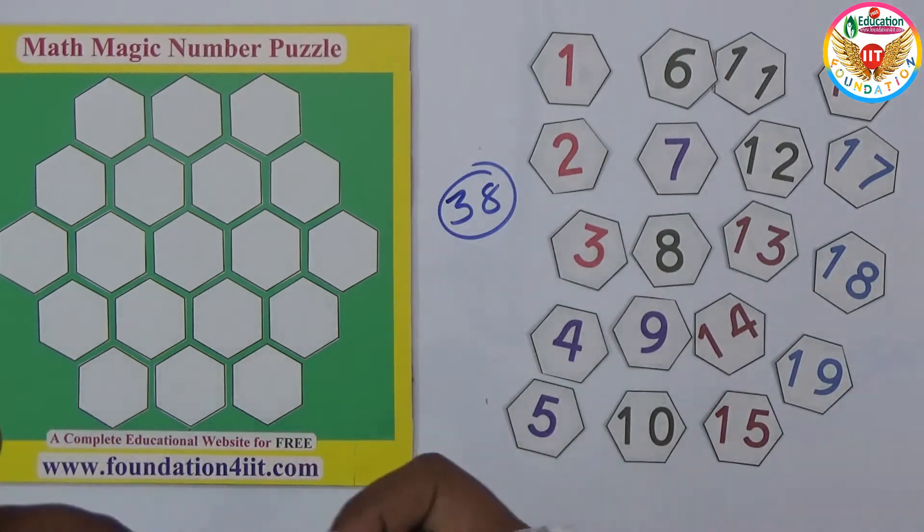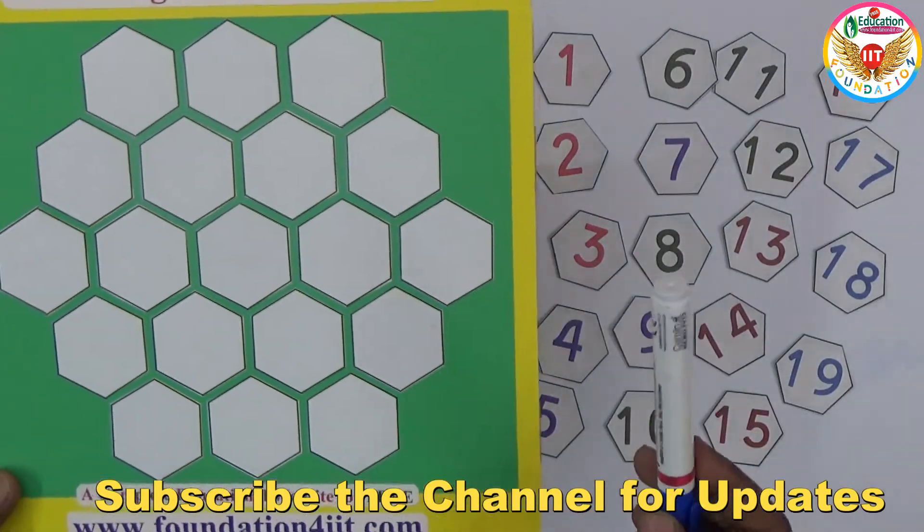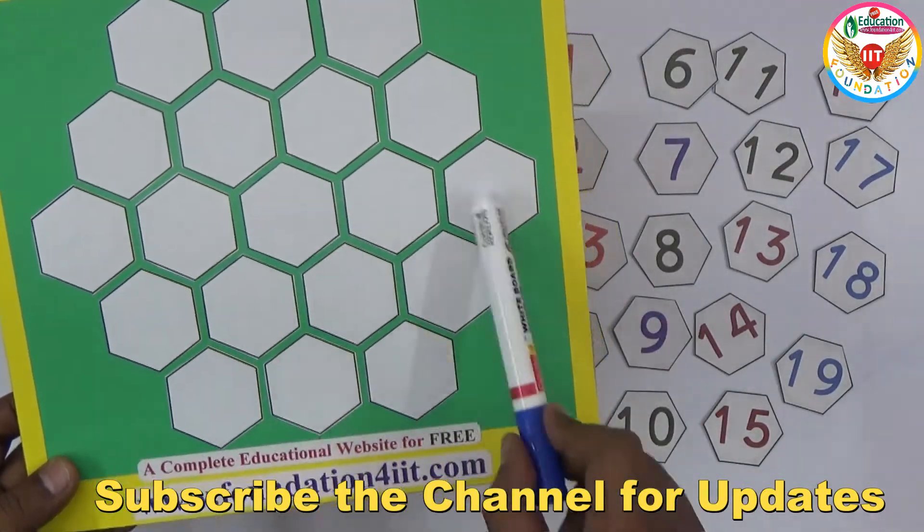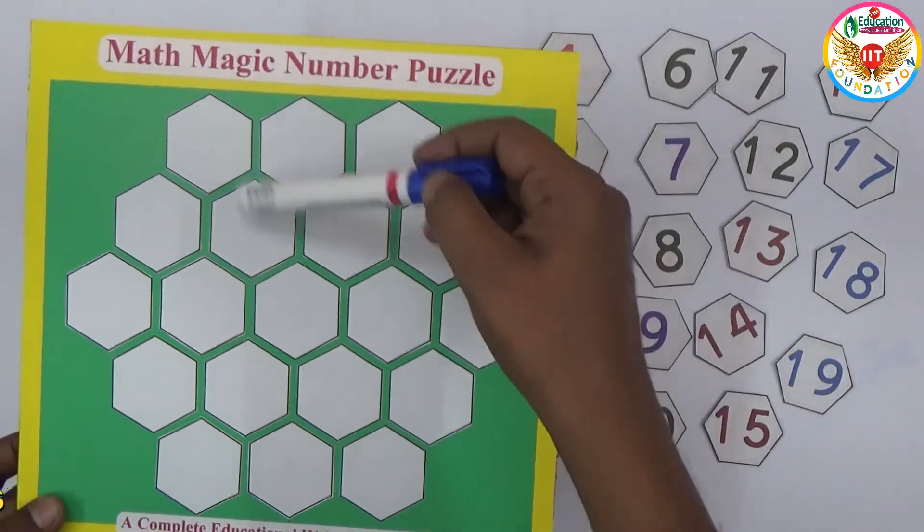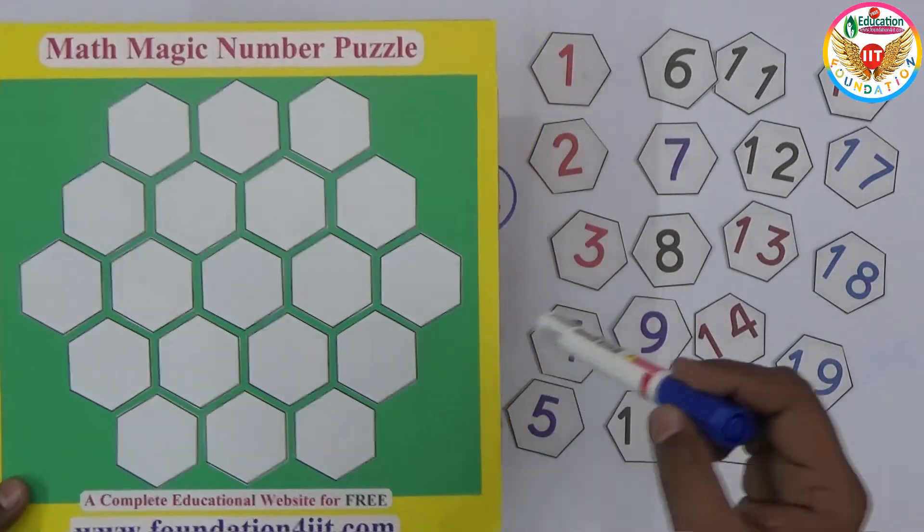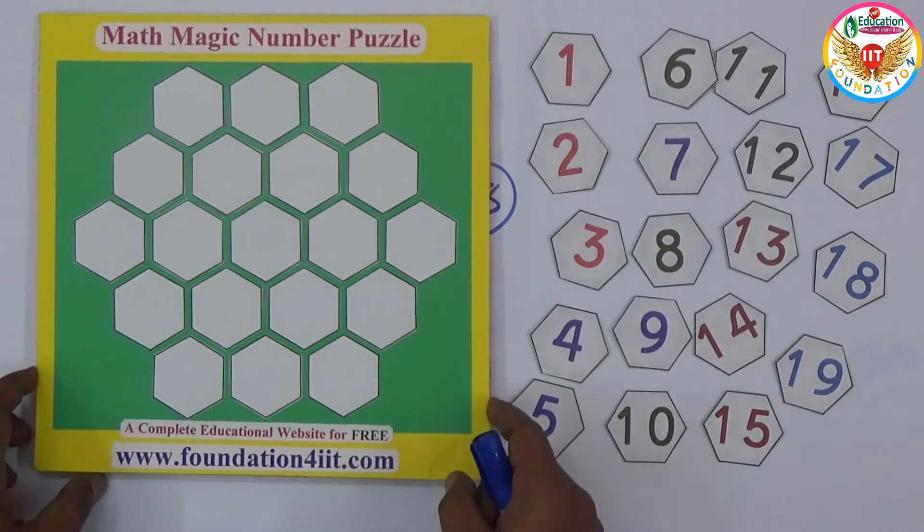For example, any straight line here you can get: one, two, three, four, five. Again this way also you'll get five, like this also five. Total 15 ways. So in 15 ways you can get the sum exactly equal to 38.